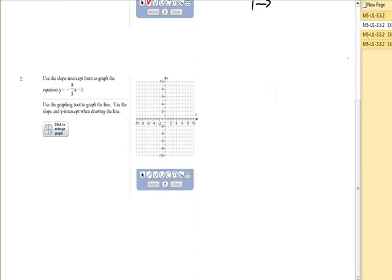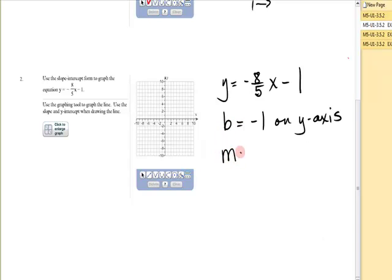All right, let's look at another one. y equals negative 8 fifths x minus 1. I will begin at negative 1 on the y-axis. Now, be careful with this slope. There's a negative sign. It's directly in front of the fraction. It's up to you. You can put it with the top and let the bottom be positive, or you can drop it down and put it with the denominator. It is totally up to you. All right, so let me show you how they'll both work.